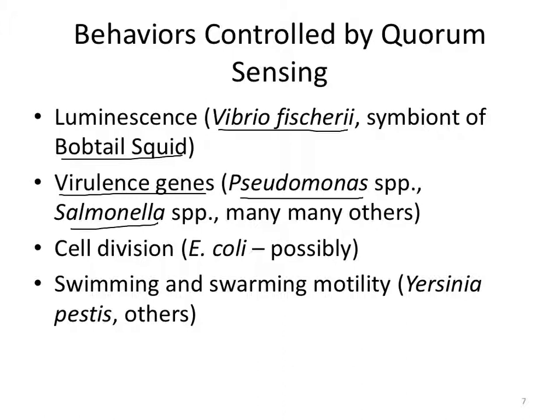It's thought that E. coli may regulate its cell division to some extent using quorum sensing methodology, and we know that pathogens like Yersinia pestis and many other organisms regulate behaviors of swimming and swarming motility using quorum sensing methods. The importance of quorum sensing in nature is well studied and documented, but over the next 10 to 20 years, as we identify new organisms in the environment and study new microbial communities, we will likely see that this behavior is even more widespread than we currently think.